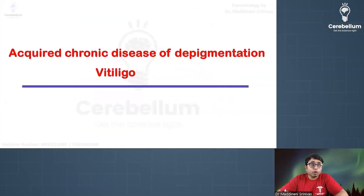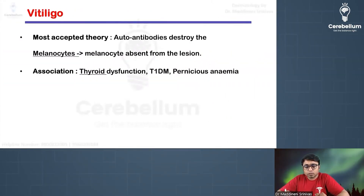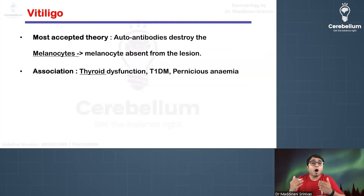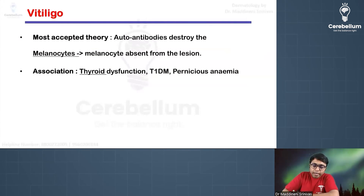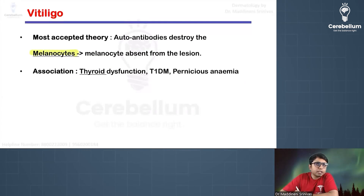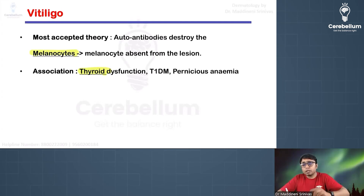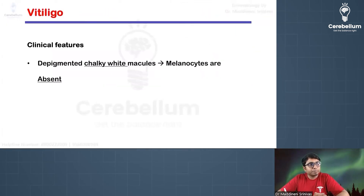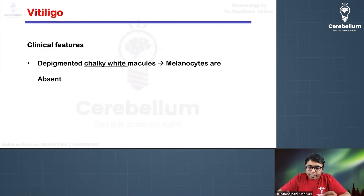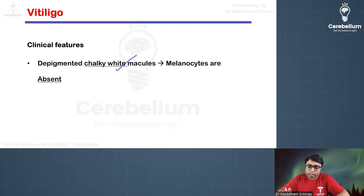Let us discuss vitiligo, which is an acquired depigmentary disorder. The basic problem is that patients have autoantibodies against melanocytes, leading to destruction of melanocytes in certain areas of the body. It is usually associated with thyroid dysfunction — hypo or hyperthyroidism. Patients present to a dermatologist with chalky white, very white colored macules over the body.